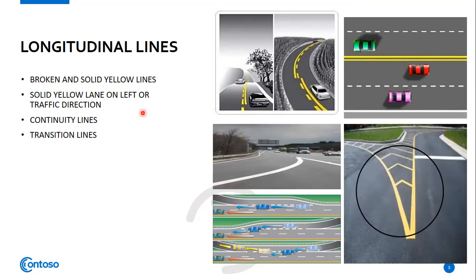Another marking is the solid yellow edge line on the left of the traffic direction. As you can see in the picture, the driver must not stop at the side of a road marked with a continuous yellow edge line. Parking is prohibited alongside a continuous yellow edge line.